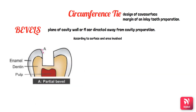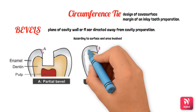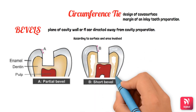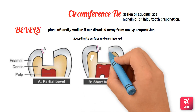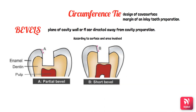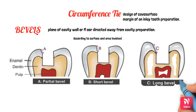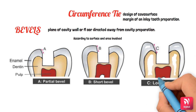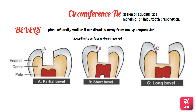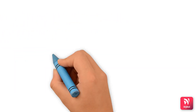The first type is a partial bevel, which involves only part of the enamel wall and is not more than two-thirds of the thickness of the enamel. A short bevel involves the entire enamel wall but not the dentin, and is usually indicated in most cast gold inlay cavities. A long bevel involves all the enamel and half of the dentinal wall, and may also be used for inlay cavities. It is also one of the resistance and retention features of the preparation.